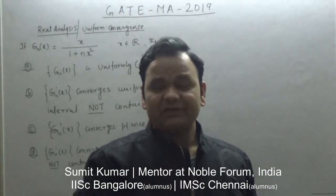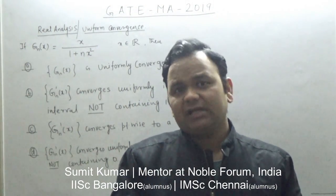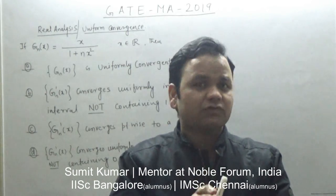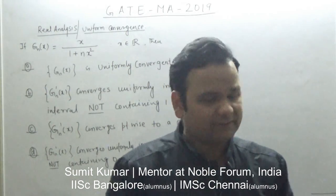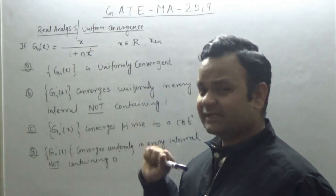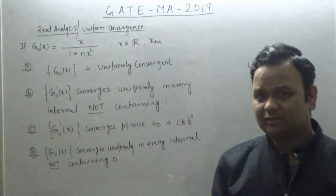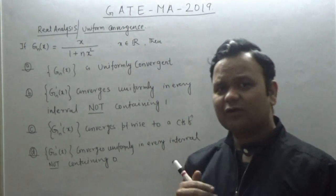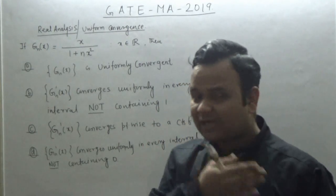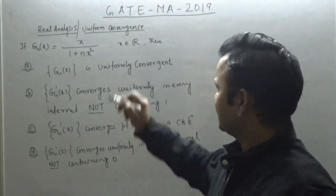Hello everyone, this is Sommet Kumar. In this video I am going to talk about the real analysis asked in GRE 2019. It's a memory-based question and the topic in real analysis is uniform convergence. Let's see the question first and how one should approach this kind of problem. The sequence of functions is g_n(x) where n is a natural number.